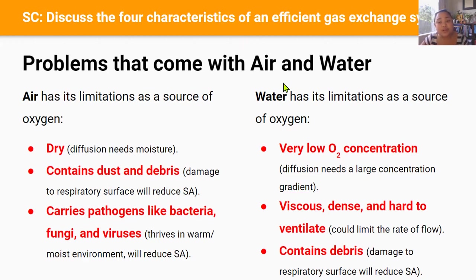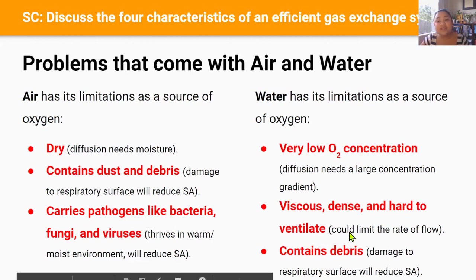Now let's look at the limitations of water. Water has very low oxygen content, which is a problem because diffusion is driven by a large concentration gradient — so how does a gas exchange system get as much oxygen out of water as possible? Water is also viscous and dense, making it hard to ventilate, which could limit the rate of ventilation. And water contains debris like rocks or other material that can damage the respiratory surface, reducing surface area and diffusion.